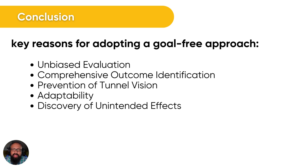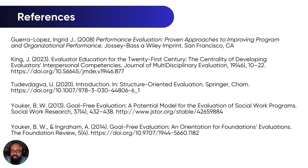As we wrap this up, there are five key reasons for adopting a goal-free approach. First, unbiased evaluation — evaluators can be objective and look at all the outcomes. It is comprehensive, looking at the overall picture with a holistic lens. It prevents tunnel vision by focusing on the larger picture. It is adaptable — if something happens during the evaluation process, there is a way to adapt to changes and resistance. And it discovers unintended effects, which a lot of times are positive. These are the references for what you just saw — you can pause the video to check them out.